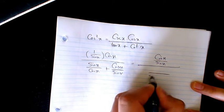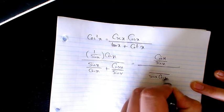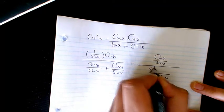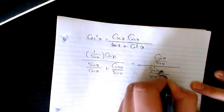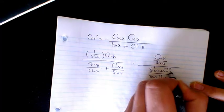Here in the denominator I have the common denominator sine x times cosine x. Here I have sine squared x plus cosine squared x.